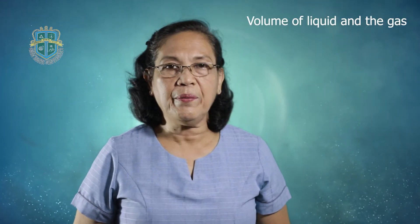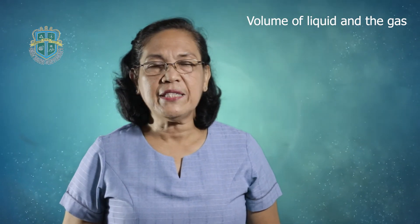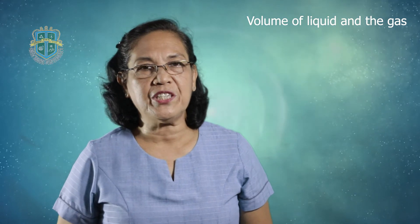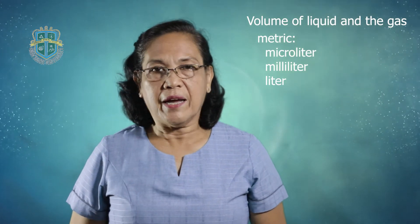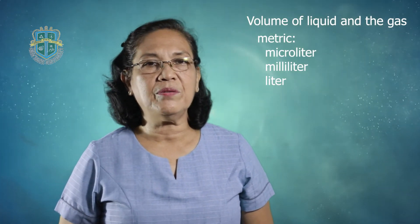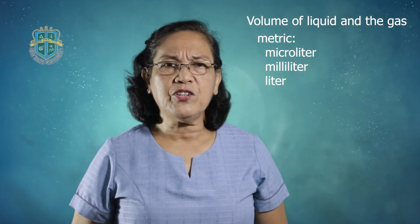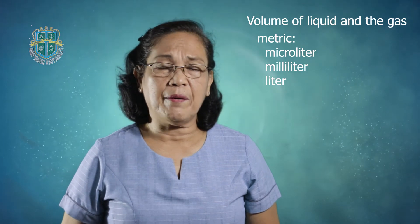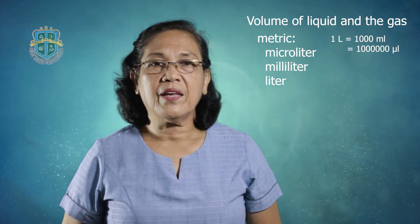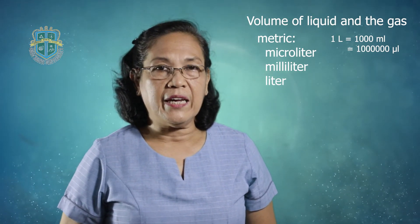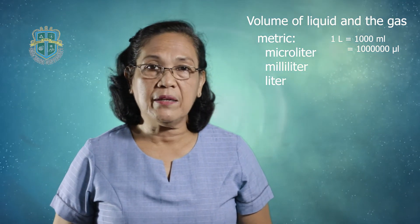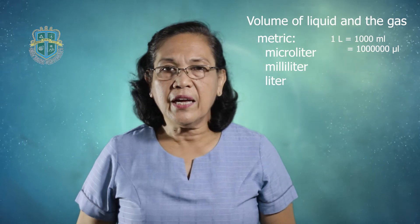We are done discussing the volume of solids. Let's go to the volume of liquid and gas. For liquids and gases, the volume can be expressed in the metric system using microliters, milliliters, and liters. One liter is equal to 1,000 milliliters, and one liter is also equal to 1,000,000 microliters.